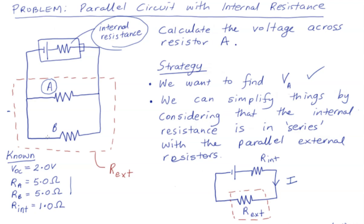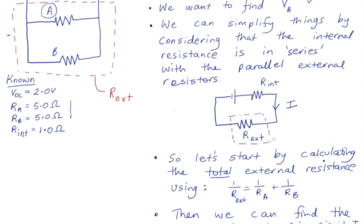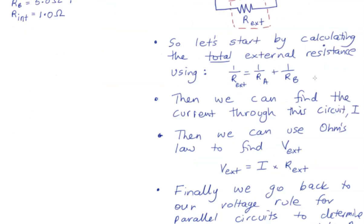So then that means what we'll do is work out what that external resistance is using our formula for calculating the total resistance of parallel resistors. When we have that value, we can then determine what the current through this circuit is.